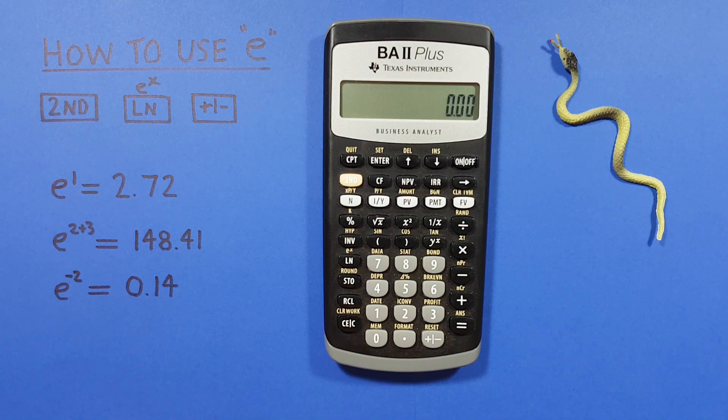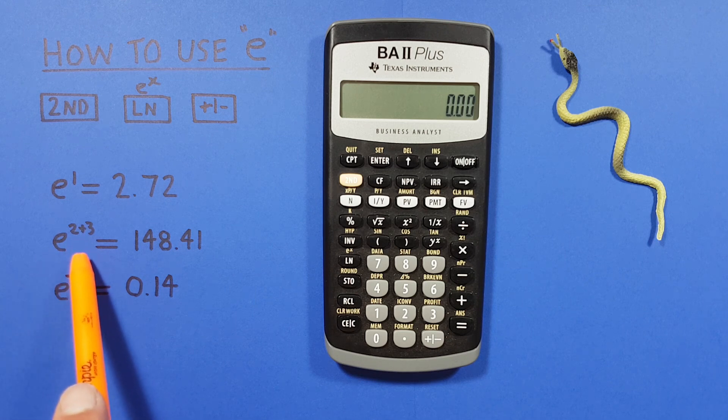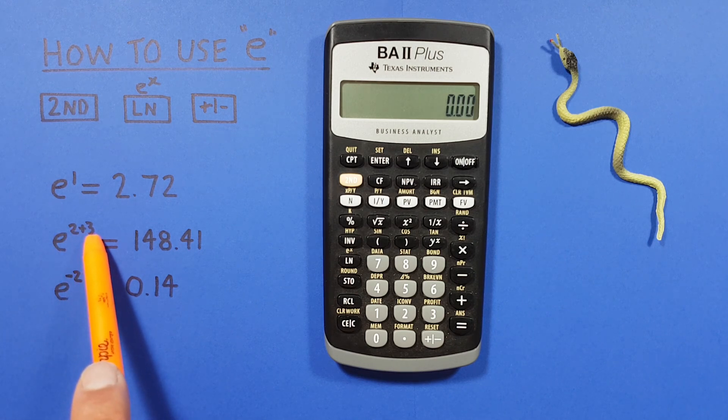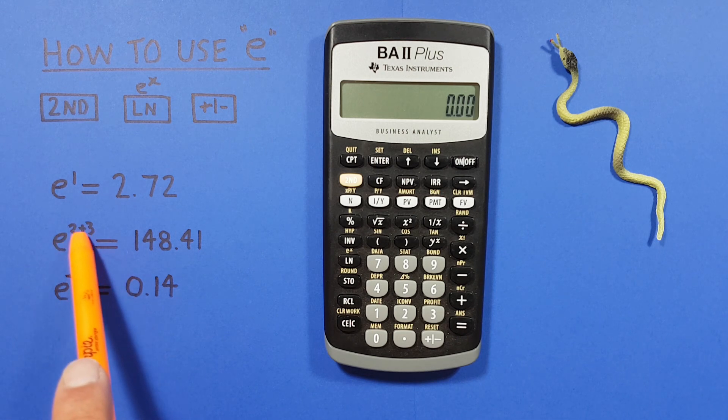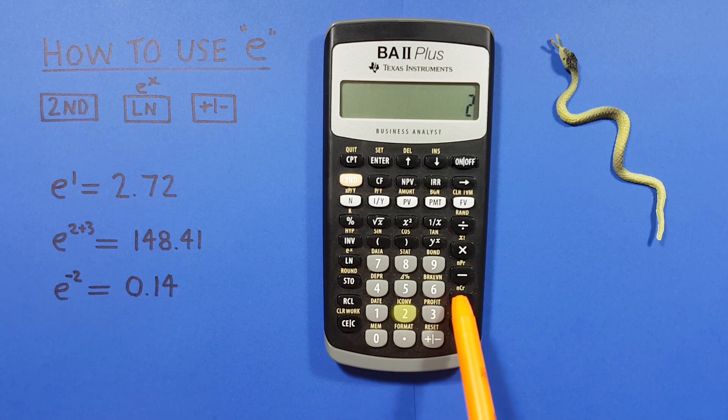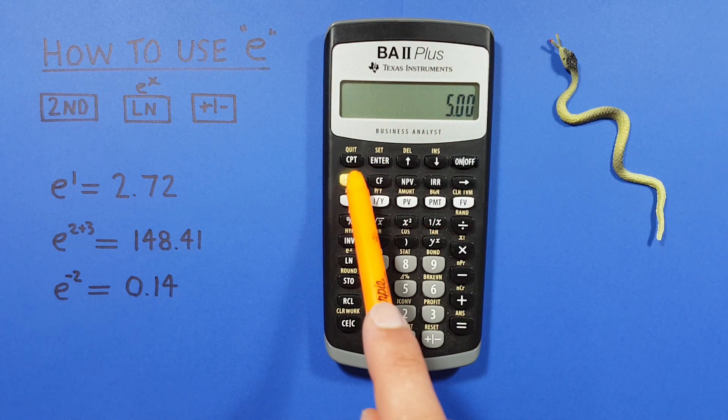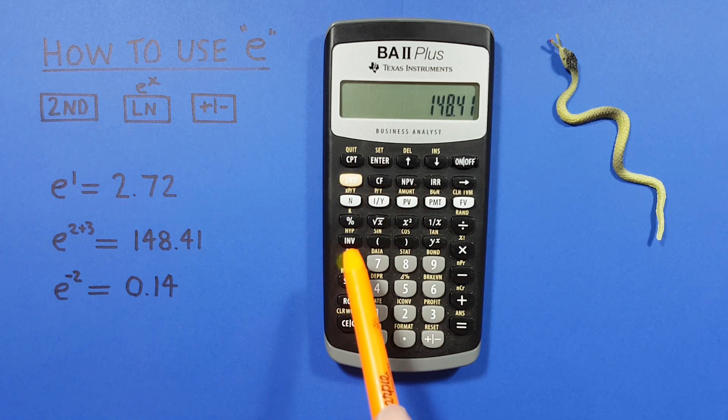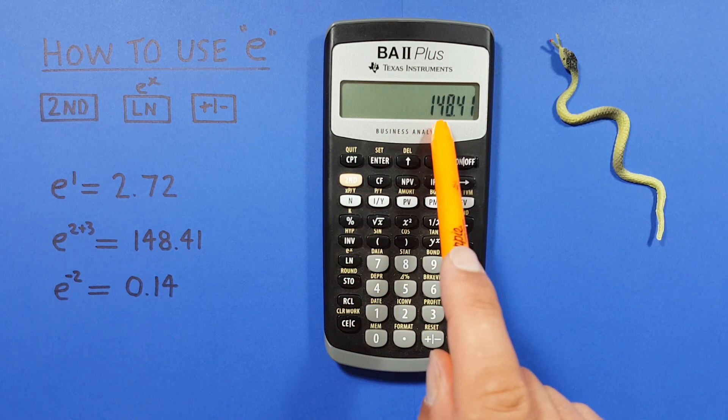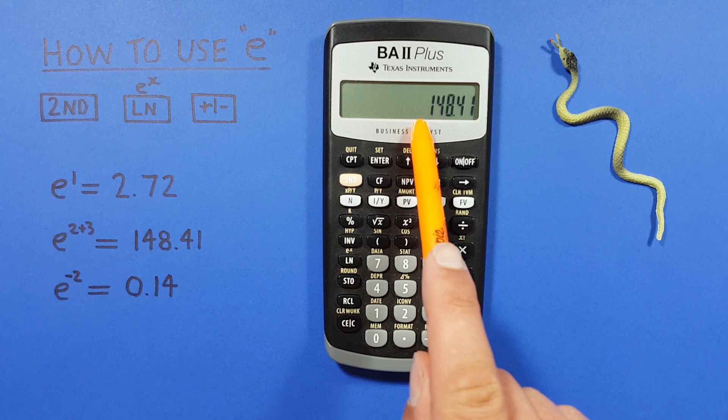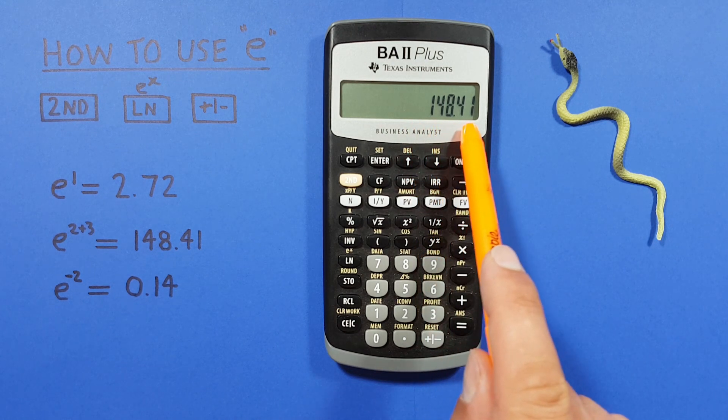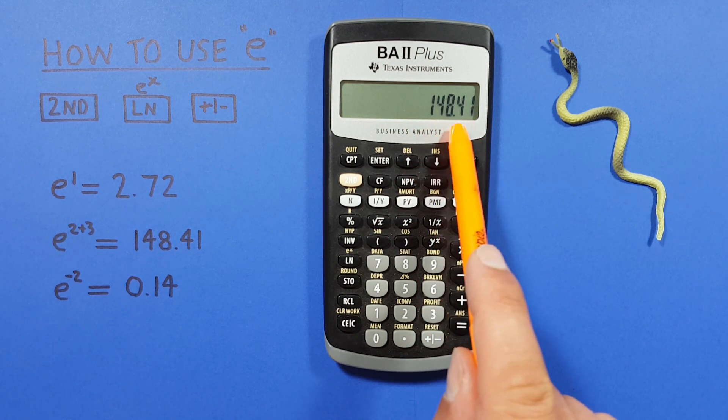We can also use a more complicated exponent. Let's say we wanted to do e to the power of 2 plus 3. First we enter our exponent, so 2 plus 3, get that result, and then again second LN. We see that e to the power of 2 plus 3 equals 148.41. Again, this is rounded.